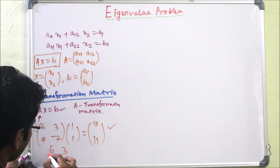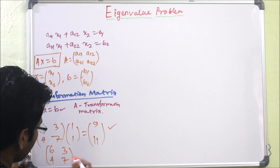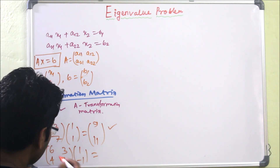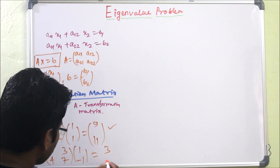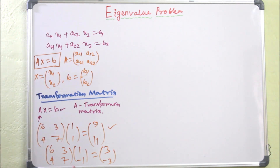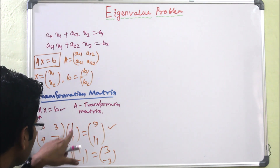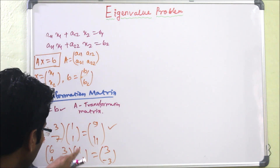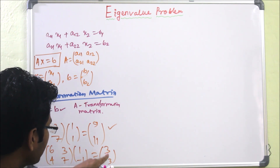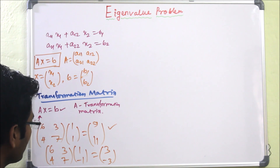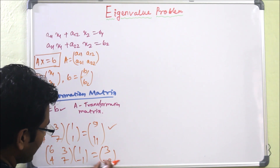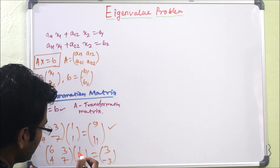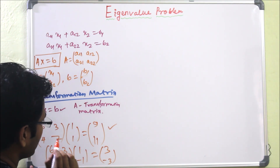For another example, if we multiply [6, 3; 4, 7] by [1, -1], we get [6-3, 4-7] = [3, -3]. Now we can observe a relation: the vector [3, -3] is a scalar multiple of [1, -1], since 3 × [1, -1] = [3, -3].